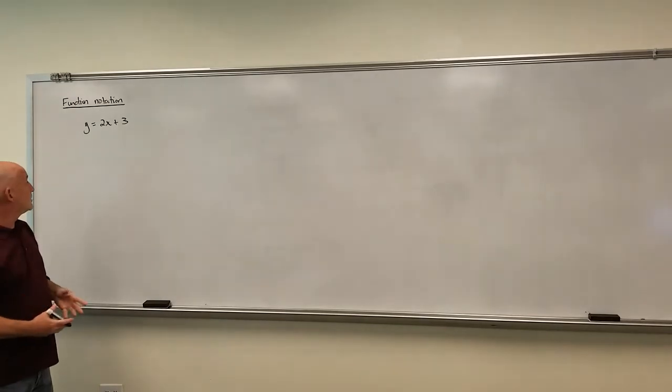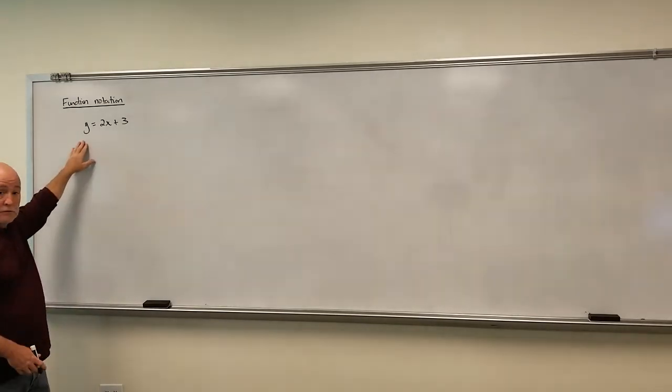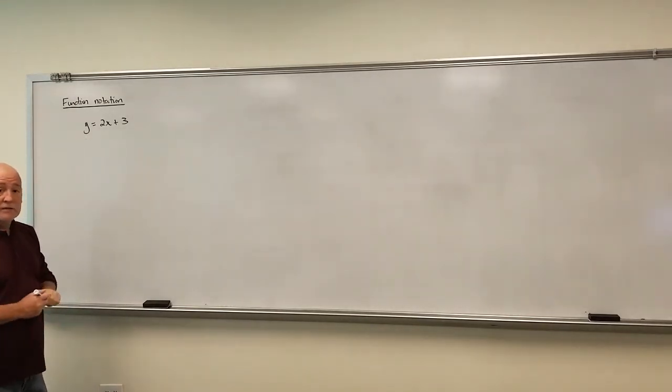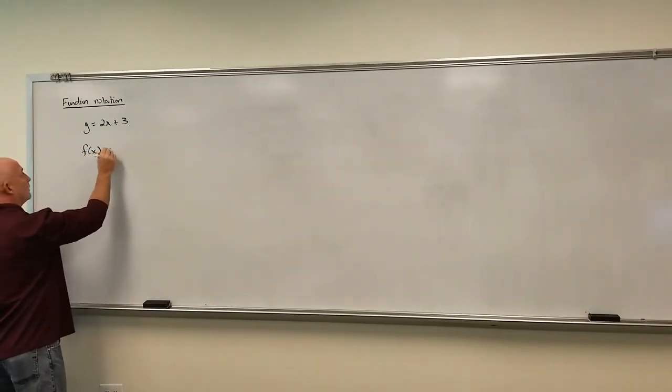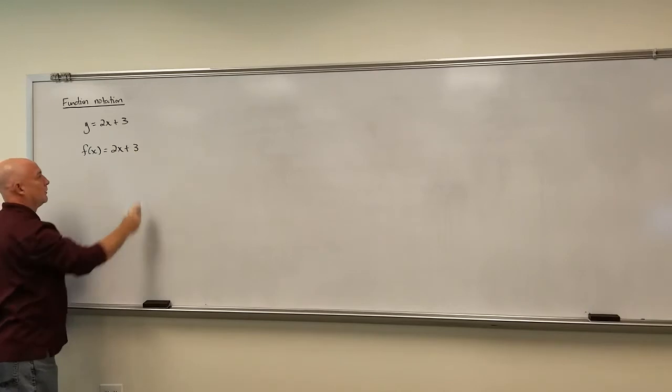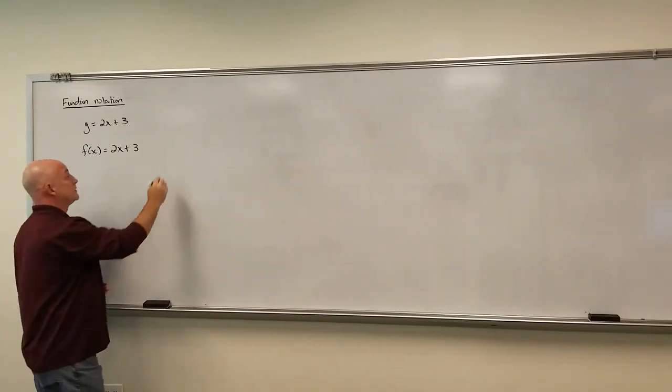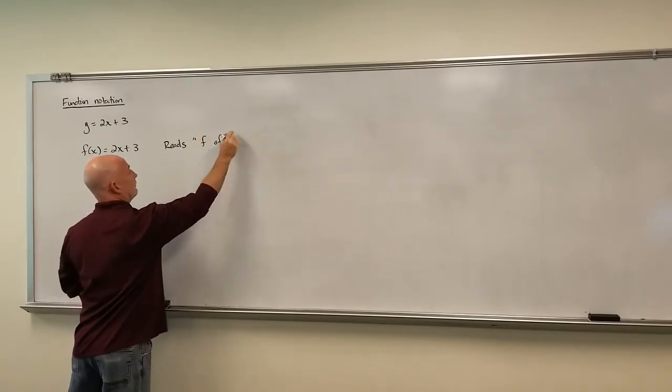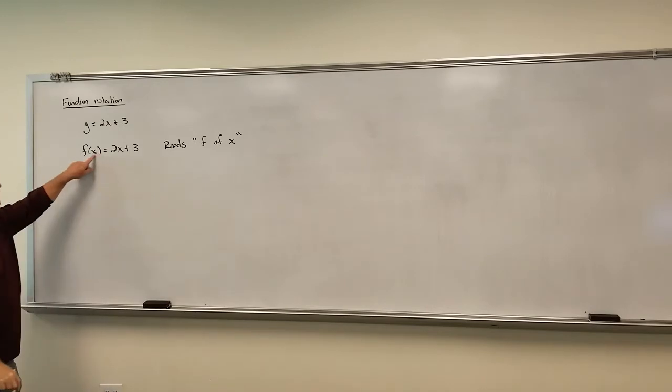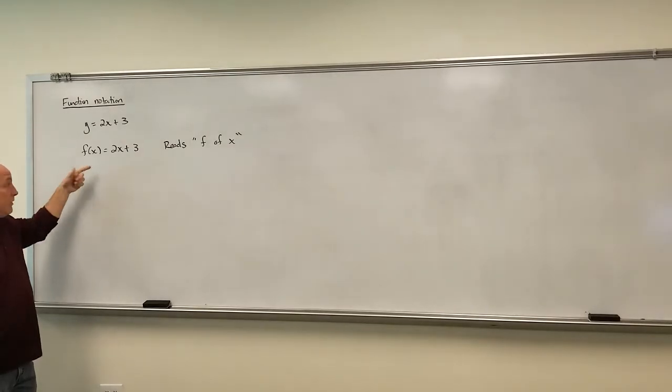So Euler decided instead of using this Y notation, he was going to replace the Y with something like this. Now the way that you read this is f of x. Now that is not multiplication. I know it looks like multiplication, but it's not. This is called function notation.